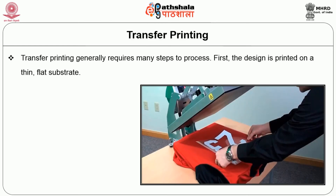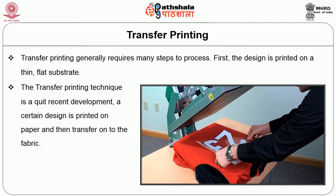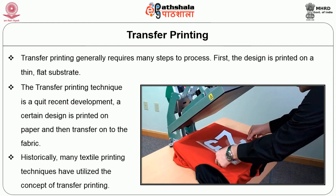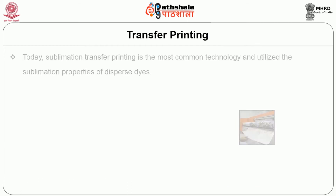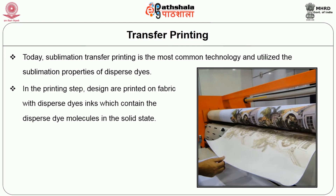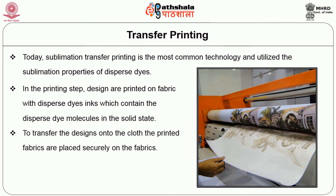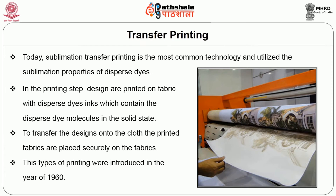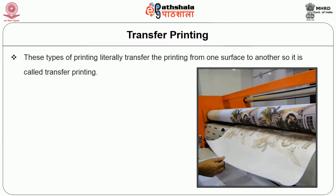Transfer printing generally requires many steps to process. First, the design is printed on a thin flat substrate such as paper, and then transferred onto the fabric. Historically, many textile printing techniques have utilized the concept of transfer printing. Today, sublimation transfer printing is the most common technology, utilizing the sublimation properties of dispersed dyes. In the printing step, designs are printed on paper with dispersed dye inks containing the dispersed dye molecules in the solid state, and then the design is transferred onto the cloth. This type of printing was introduced in the year 1960.